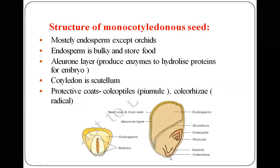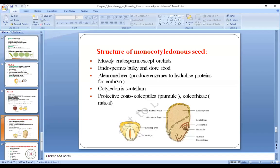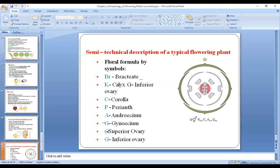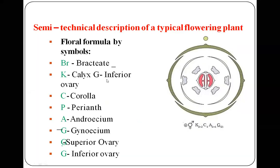We have now completed the topics of fruit and seed, covering both the dicot and monocot seed structures. Next, we move to the last topic of this chapter: the semi-technical description of a typical flowering plant, which involves floral formulas depicted through specific symbols.